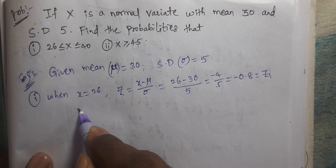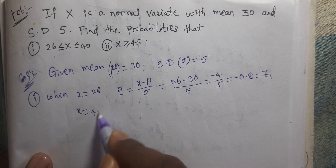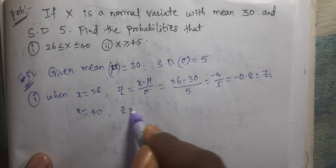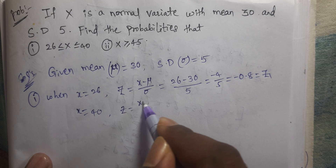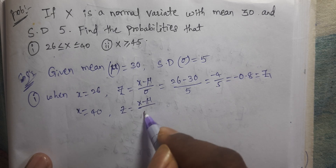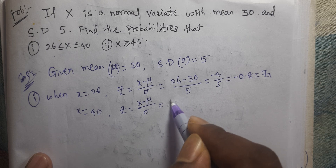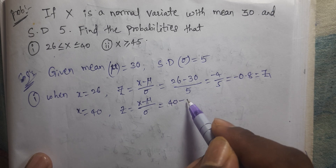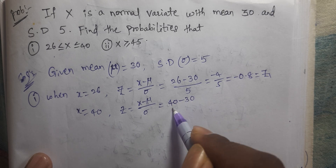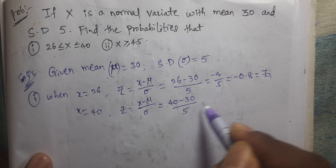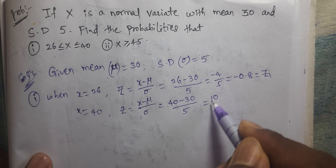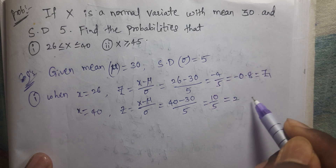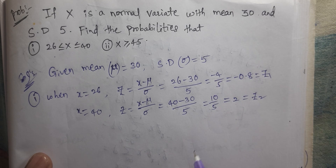Next, X equal to 40, Z equal to X minus mu by sigma, that is equal to 40 minus 30 by 5, that is 10 by 5, equal to 2. This is equal to Z2.